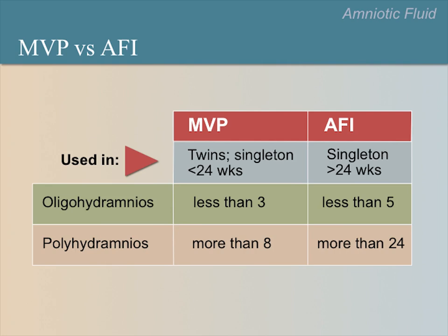The maximal vertical pocket method should be used in twins and singleton pregnancies less than 24 weeks. Oligohydramnios is diagnosed with an MVP less than 3, and polyhydramnios is diagnosed with an MVP greater than 8. The amniotic fluid index should be used in singleton pregnancies with a gestational age greater than 24 weeks. Oligohydramnios is diagnosed with an AFI less than 5, and polyhydramnios is diagnosed if greater than 24 centimeters.